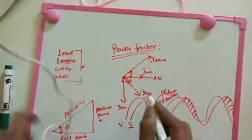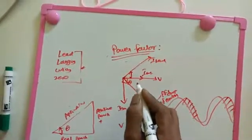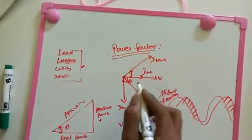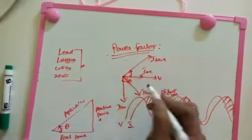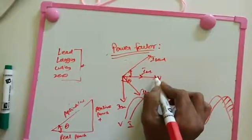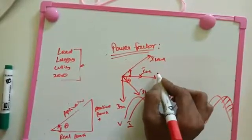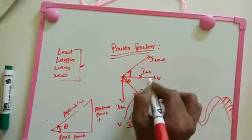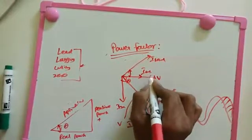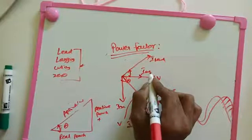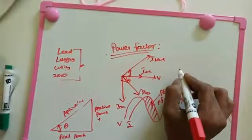This is the method we use to identify power factor as lagging, leading, or unity. The angle between the supplied voltage and current is called the power factor angle, and that angle is used to determine the power factor.